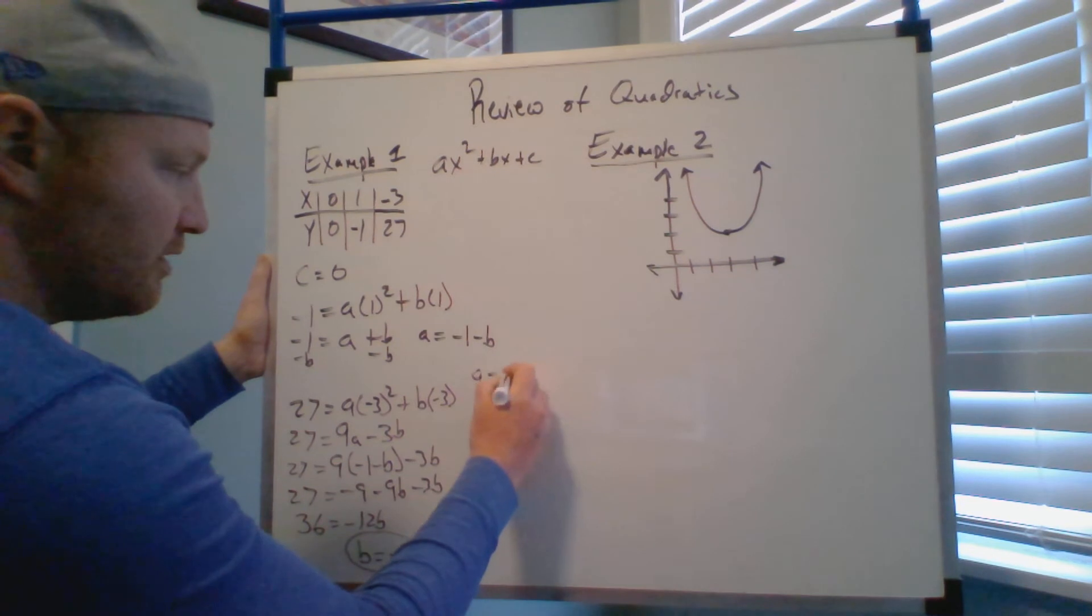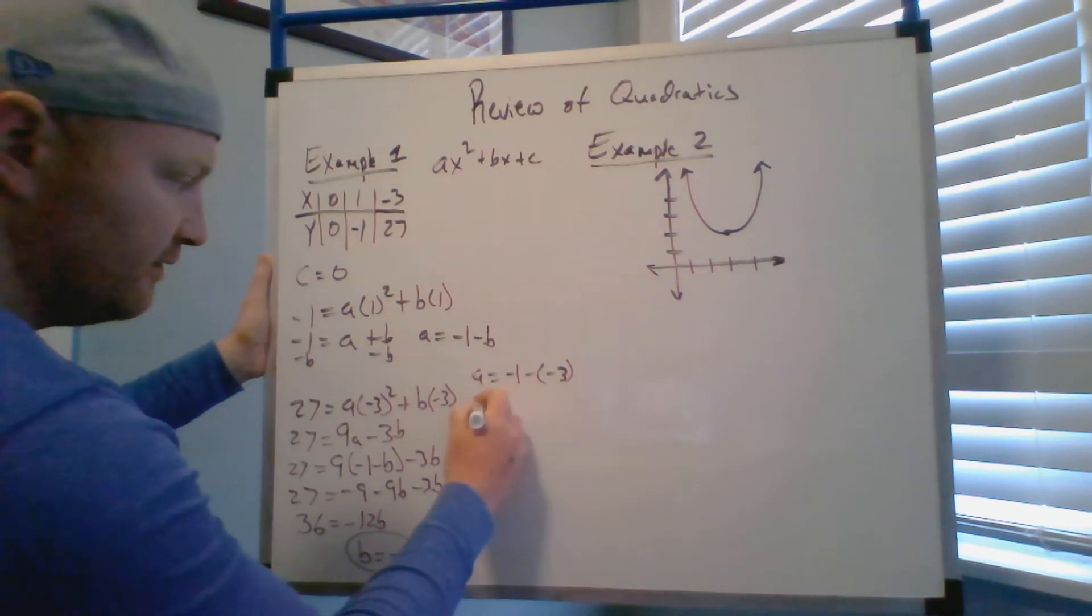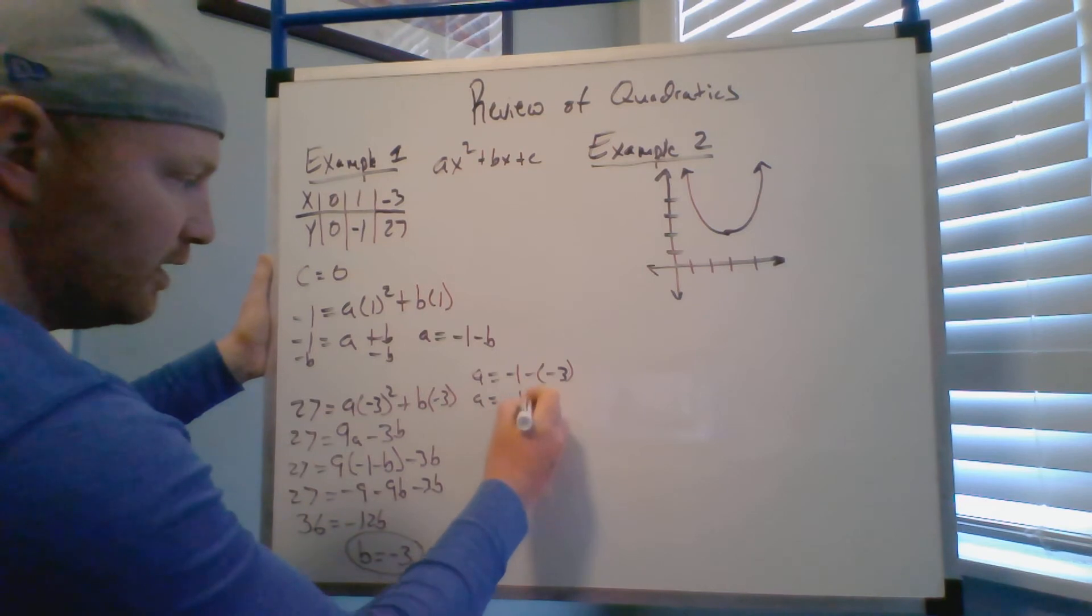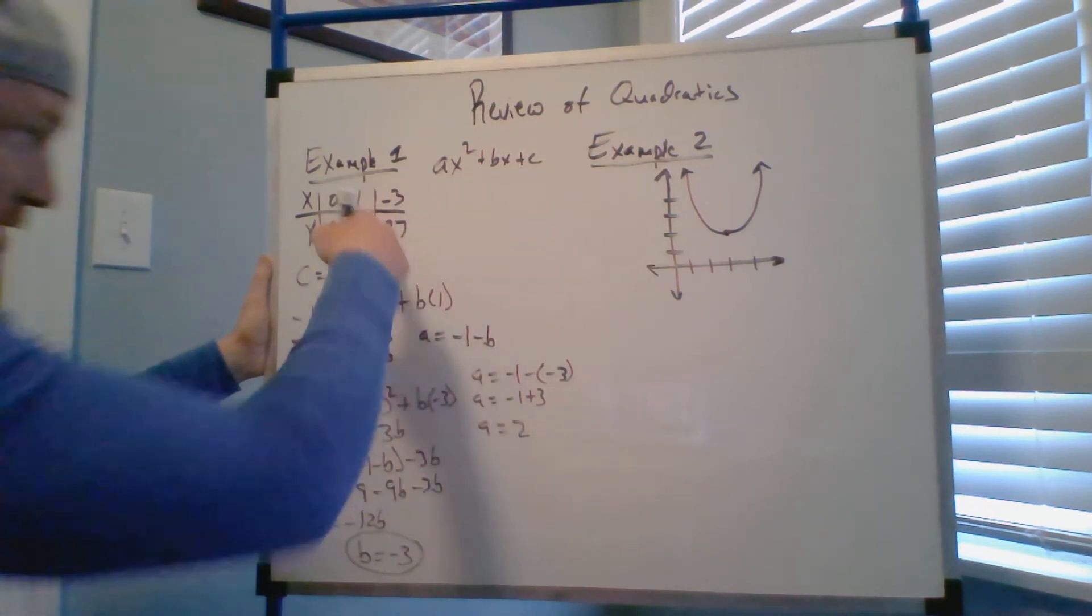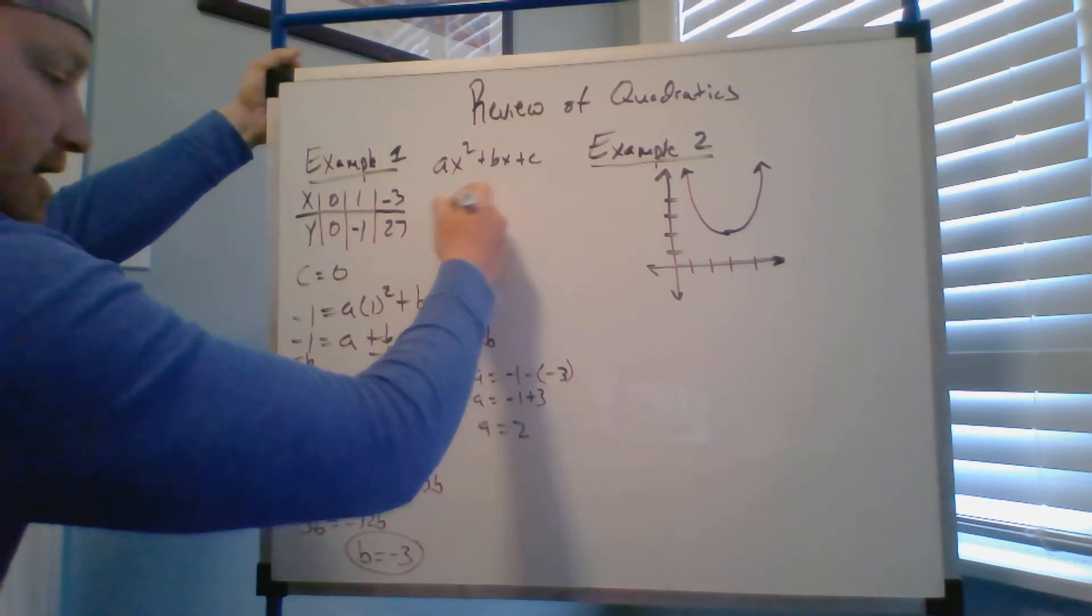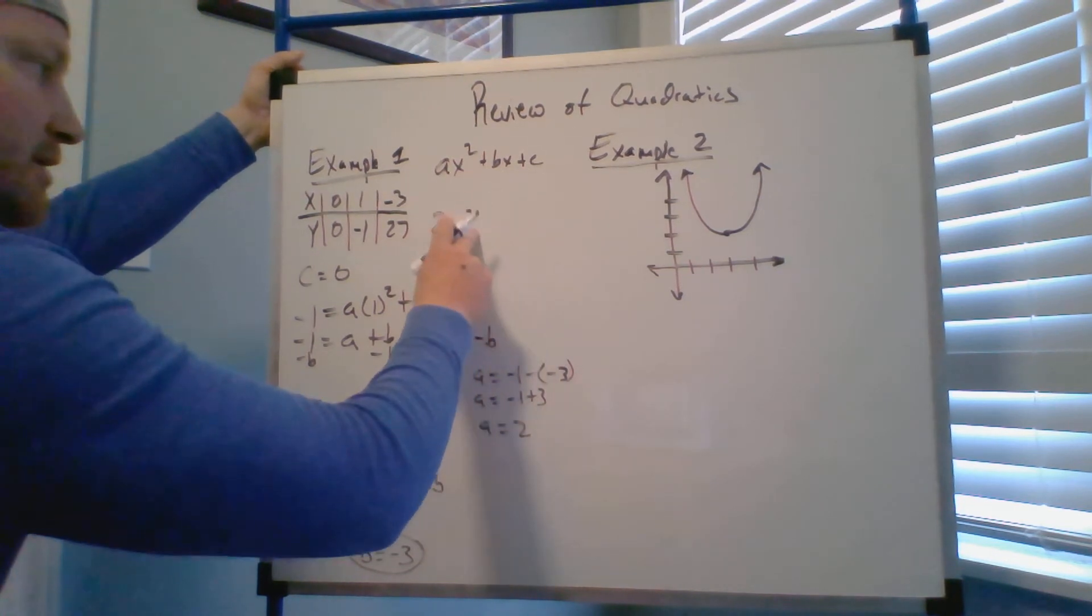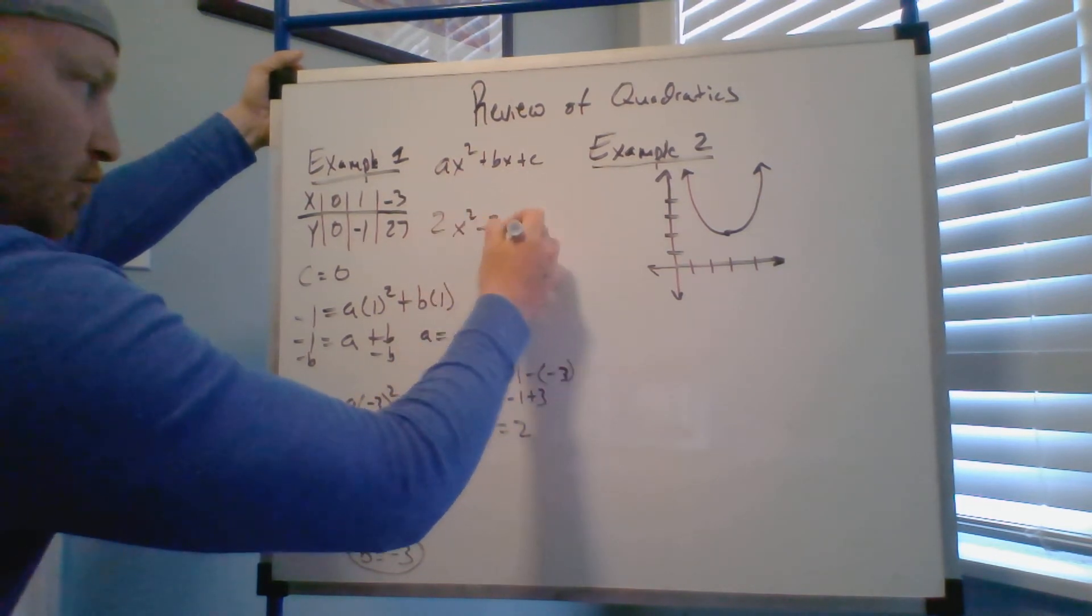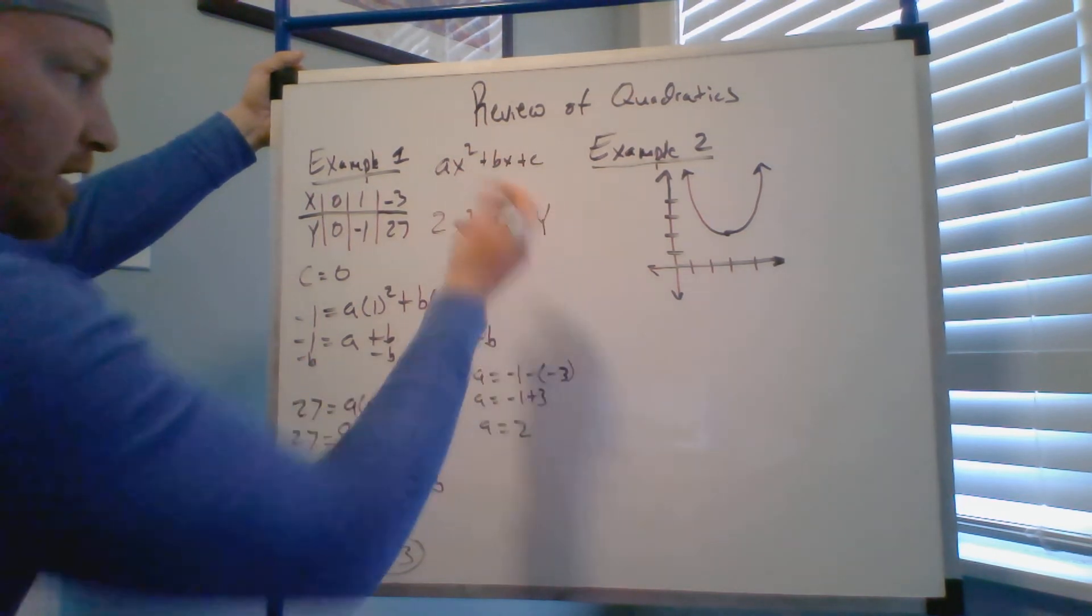If B equals negative three, well a equals negative one minus negative three, which is plus positive. A equals negative one plus three, so your a equals two. So the equation for this table right here, based on all this work, is going to be 2x squared minus 3x equals y or f of x.